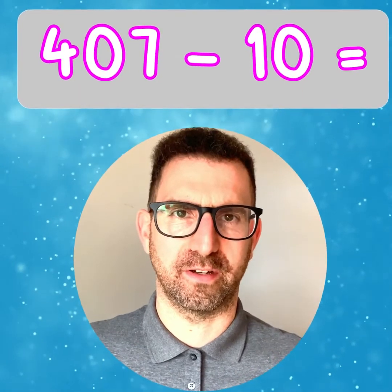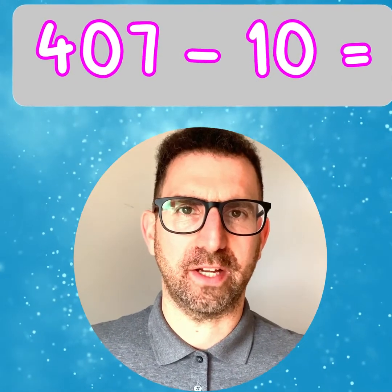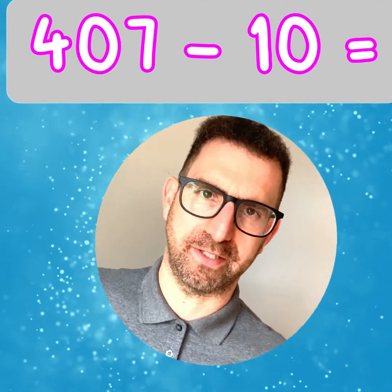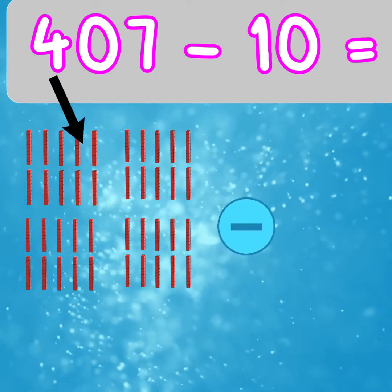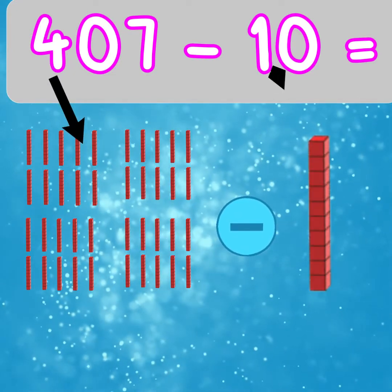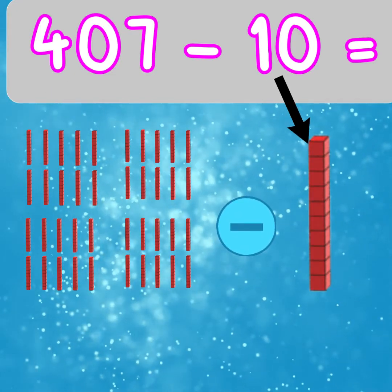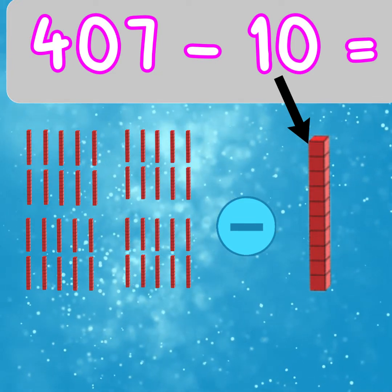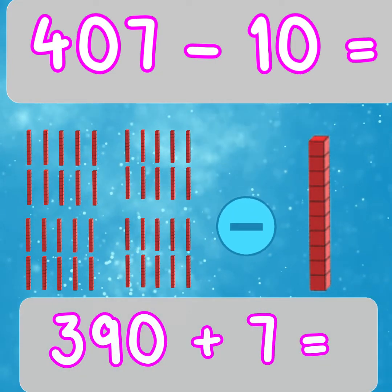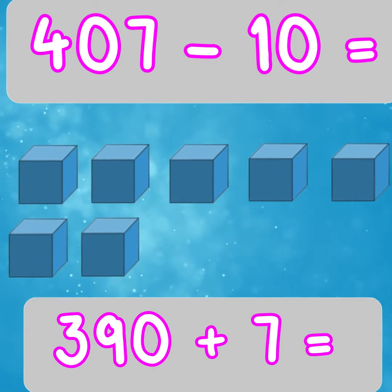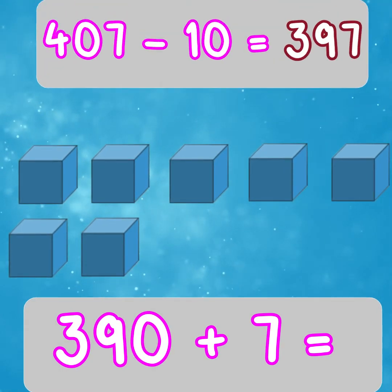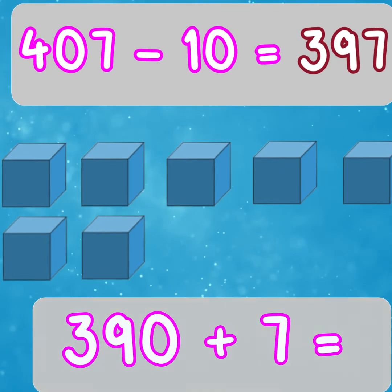Let's try a larger number. What is 10 less than 407? Here we can look at the hundreds and tens place value digits. 400 is the same as 40 tens. 40 tens subtract 1 ten would equal 39 tens, which is the same as 390. Then we just add back on the 7 ones. So the answer is 397.